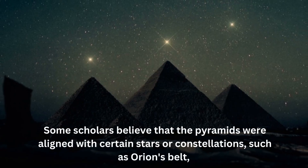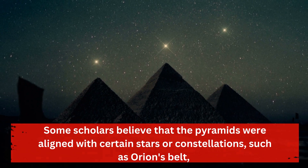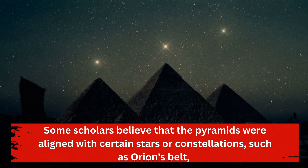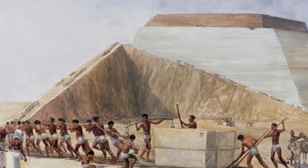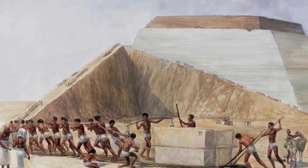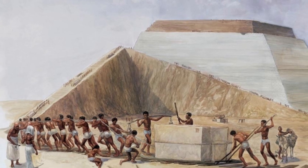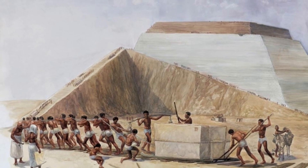Some scholars believe that the pyramids were aligned with certain stars or constellations, such as Orion's Belt, and that they served as astronomical observatories. The construction of pyramids also provided employment and economic benefits to the thousands of workers involved in quarrying, transporting, and shaping the massive stone blocks, and stimulated trade and commerce as resources were transported to the building site from throughout the kingdom.